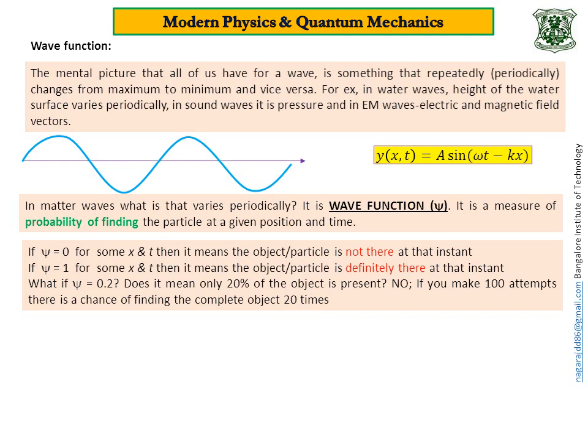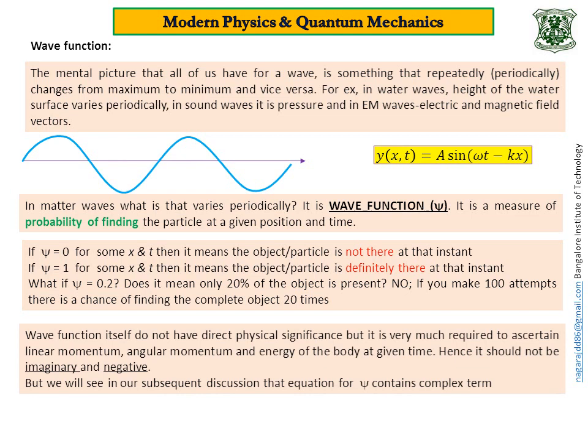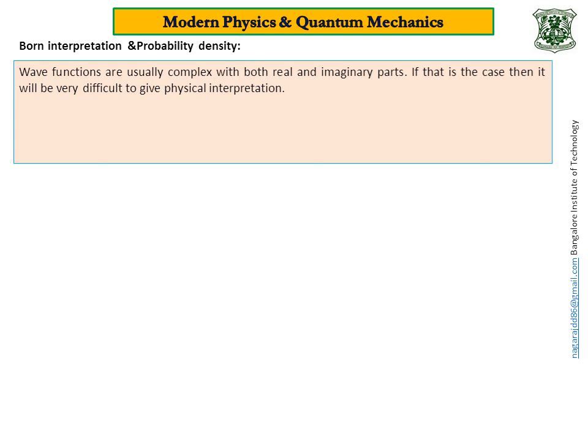That is the meaning of wave function and probability of finding the particle. Wave function itself does not have direct physical significance, but it is very much required to ascertain linear momentum, angular momentum, and energy of the particle at a given time. Hence, it should not be imaginary and it should not be negative. But we will see in our subsequent discussions that the equation for ψ contains complex terms. Then how to overcome this? Well, we will search a solution for this problem, and the solution is in terms of Born's interpretation and probability density.